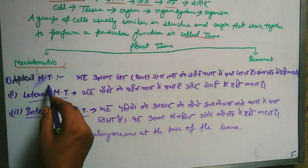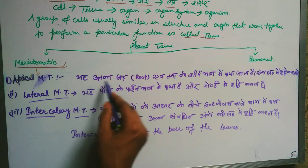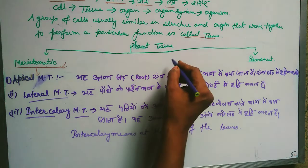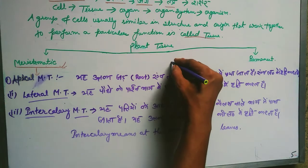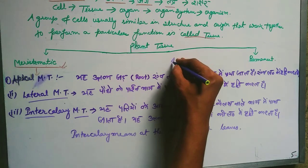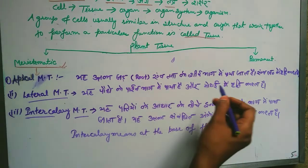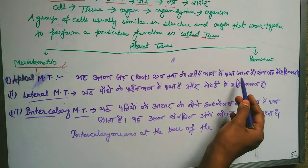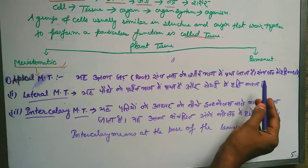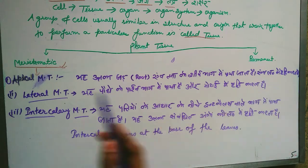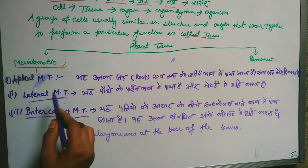Apical Meristematic Tissue is found at the apex — the upper or tip portion of the plant. This tissue is present at the tips or upper parts, and it is responsible for the growth at those ends, such as the tips of roots and shoots.